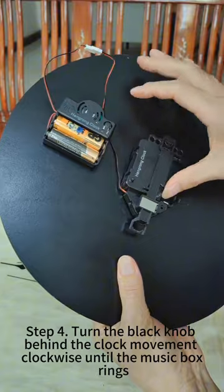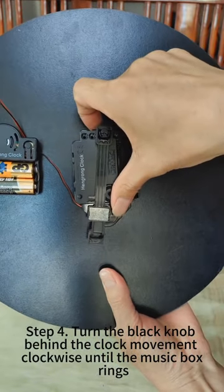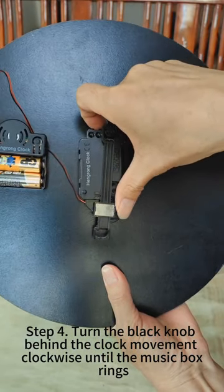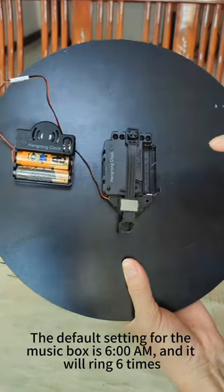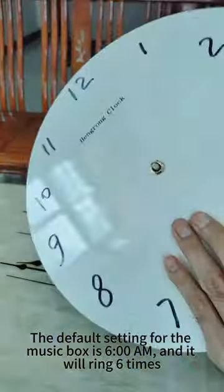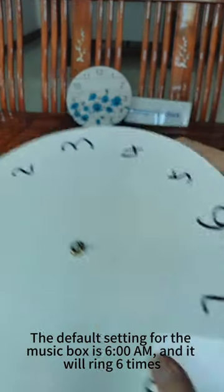Step 4. Turn the black knob behind the clock movement clockwise until the music box rings. The default setting for the music box is 6 o'clock, and it will ring 6 times.